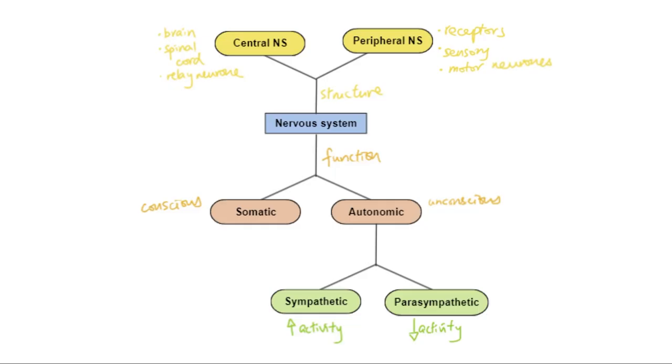Typical exam questions will perhaps give you an example of a particular action that the body is doing and then they will ask you which type of nervous system it would be controlling or what type of response in the nervous system would this be. And that is the organization of the nervous system.